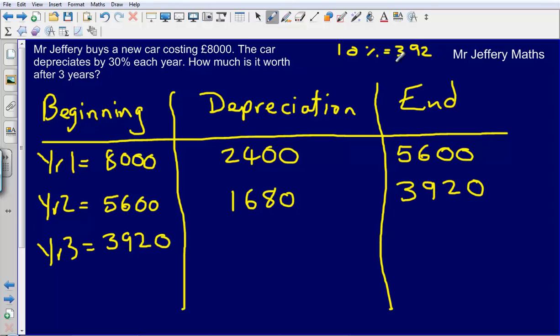Then to find my 30%, all I'm going to do is multiply 392 by 3. So I can say that my 30% is going to be £1,176. So my depreciation here is £1,176.